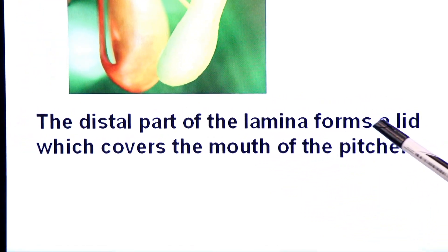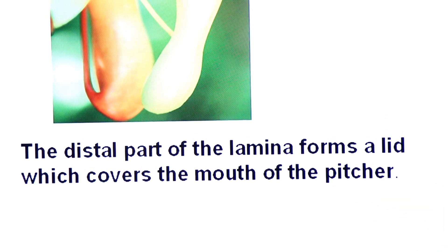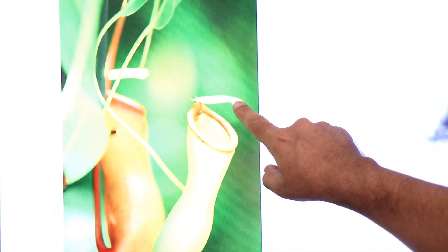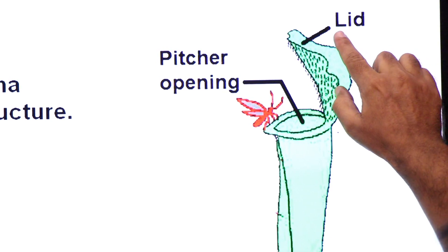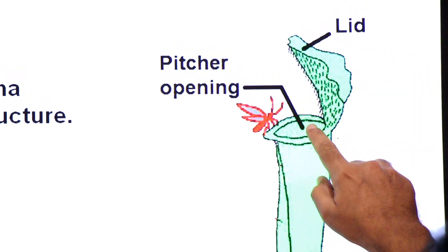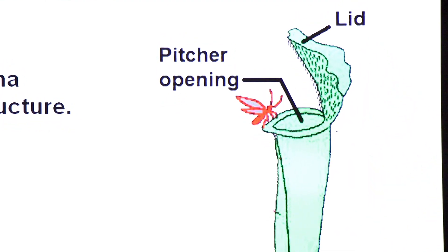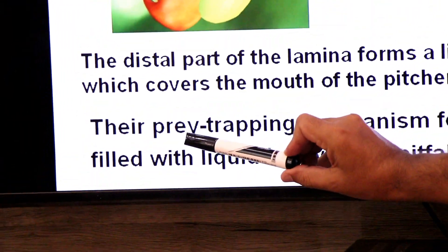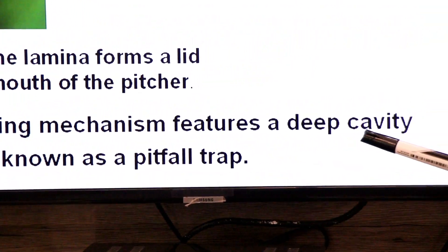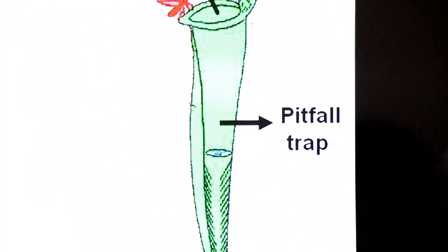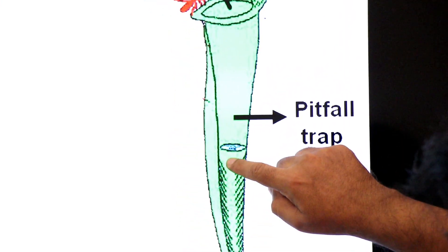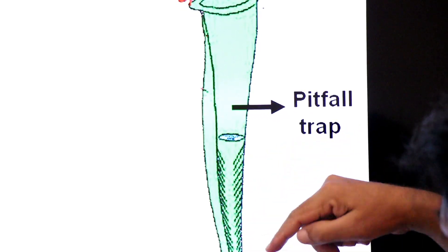The distal part of the lamina forms a lid — a covering which covers the mouth of the pitcher. Their prey-trapping mechanism features a deep cavity filled with liquid, known as a pitfall trap. The slippery surface causes insects to slip into the pitfall trap. The liquid inside contains digestive enzymes, and the insect is digested there.